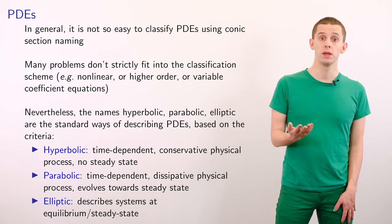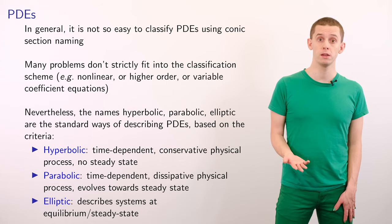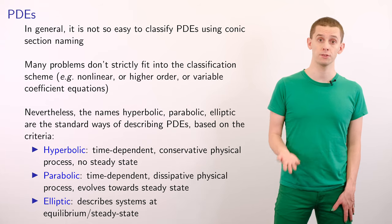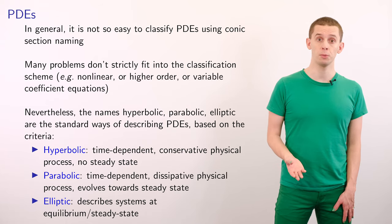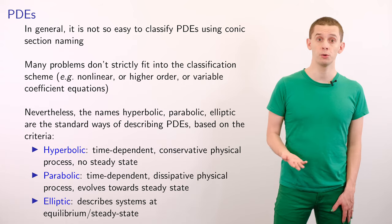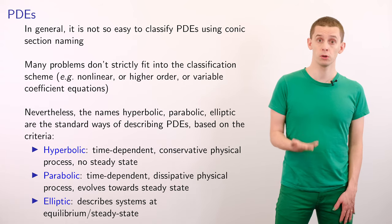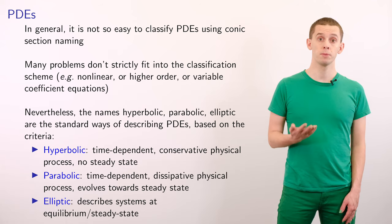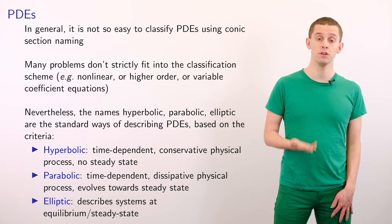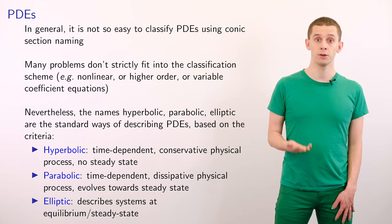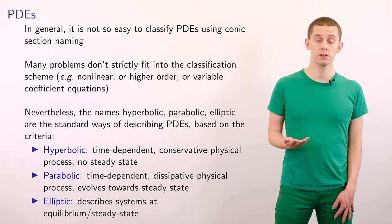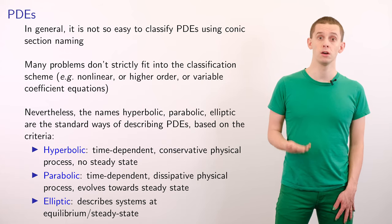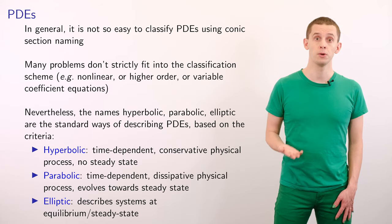More generally, though, it can be difficult to classify all PDEs using conic section naming. And many problems don't strictly fit into this classification scheme. For example, we can have nonlinear PDEs or higher order derivatives or variable coefficient equations. Nevertheless, the names hyperbolic, parabolic and elliptic are standard ways to describe PDEs. And we also find that these three classes of problems are often associated with specific features of the phenomena that we're trying to model.